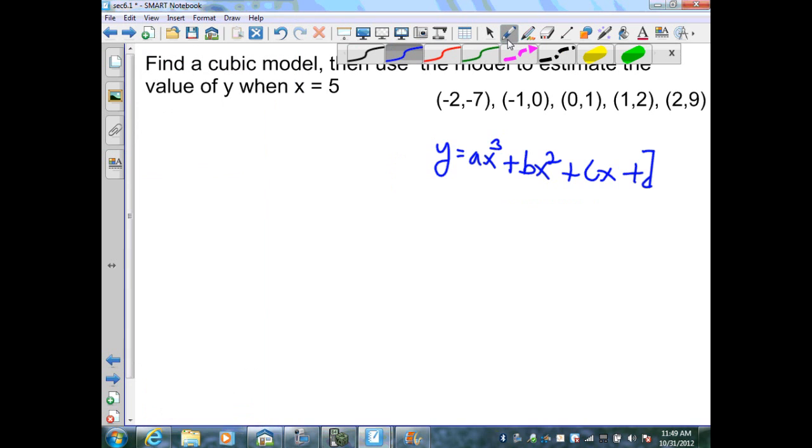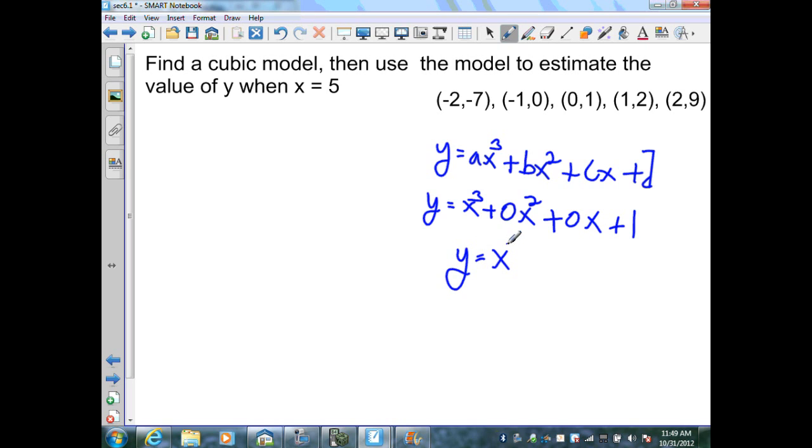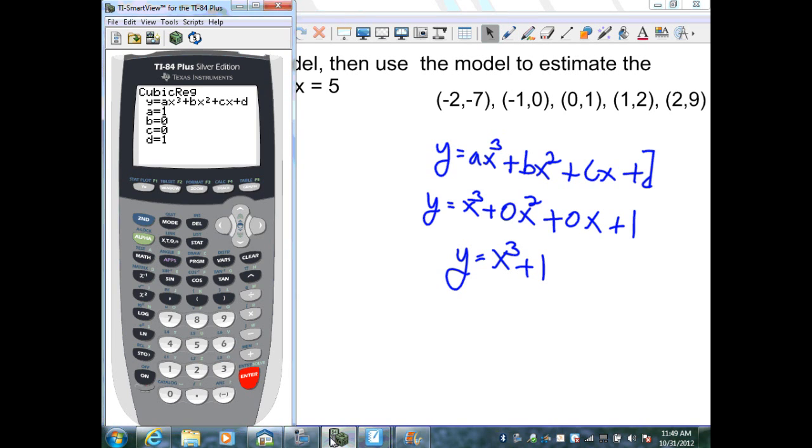So, if we go back, y equals 1 for a, x cubed plus 0, x squared plus 0, x plus 1. And when I simplify, that gives me my model to be x cubed plus 1. Let's verify that by taking a look at our graph and plot of the points. And you can see, when I graph that, it models that data perfectly.